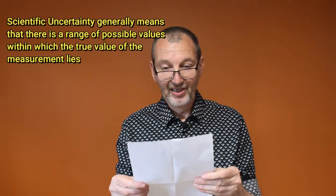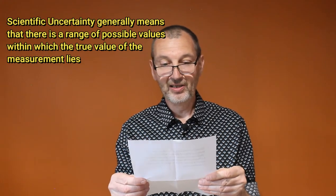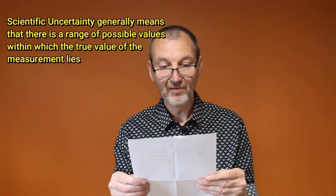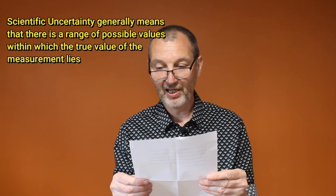In this video we're going to talk about how scientists understand uncertainty. Let's begin by having a look at the definition. Scientific uncertainty generally means that there is a range of possible values within which the true value of the measurement lies.